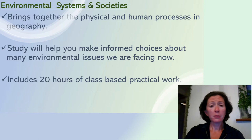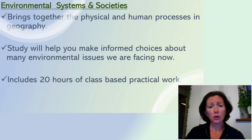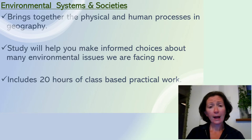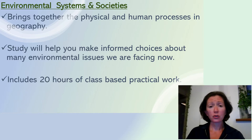We look at things like food availability — where our food comes from, how it's grown, and how that affects the local community. We also look at migration: where people are coming from, where they're going to, and how that affects the countries involved. During this course it's not just classroom-based — we have 20 hours of practical work, some in laboratories, some in classrooms, and a lot of it outside in the school grounds.